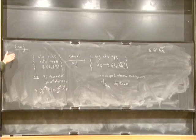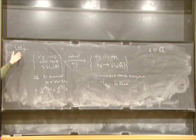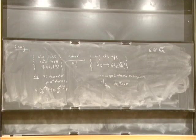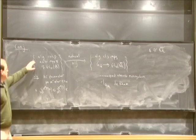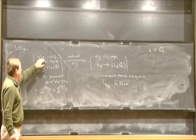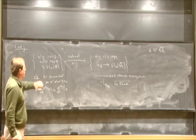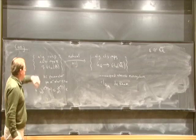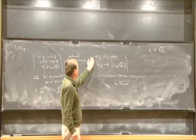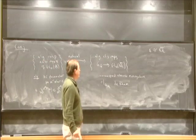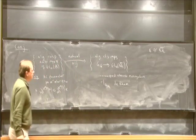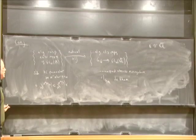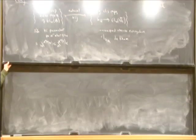I think it was Bob Langlands who first proposed some sort of correspondence like this. I think it was Clozel who first said precisely which cuspidal automorphic representations you should take, and maybe Fontaine and Mazur who first said exactly which L-adic representations you should take.